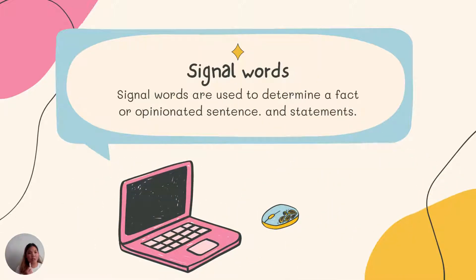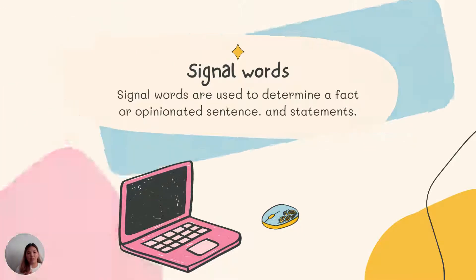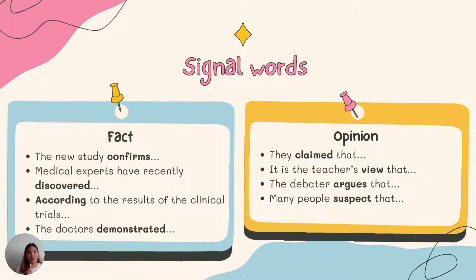Now let's learn about signal words. Signal words are used to determine whether a statement is a fact or an opinionated sentence. Examples of signal words for fact: 'The new study confirms' — the signal word is 'confirms.' 'Medical experts have recently discovered.' 'According to the results of the clinical trials' — based on statistics or 'the doctors demonstrated.' For opinion signal words: 'They claim that,' 'they say,' 'it is the teacher's view,' 'the debater argues,' and 'many people suspect that.' The cues for opinionated statements are view or beliefs.